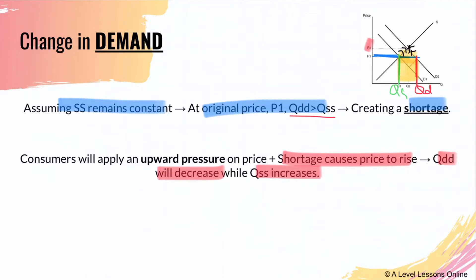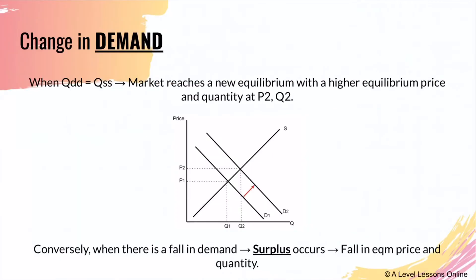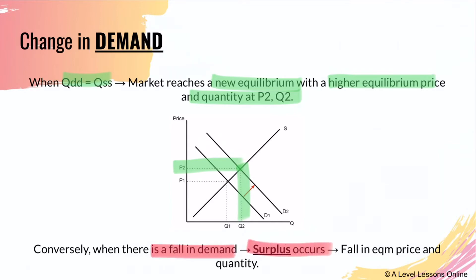This is the main bulk of price adjustment process for demand. When quantity demanded equals quantity supplied, the market reaches a new equilibrium with a higher equilibrium price P2 and a higher equilibrium quantity Q2. This is the price adjustment process. Conversely, when there is a fall in demand, a surplus will occur, and hence there'll be a fall in the equilibrium price and quantity - it's essentially moving the curve backwards.